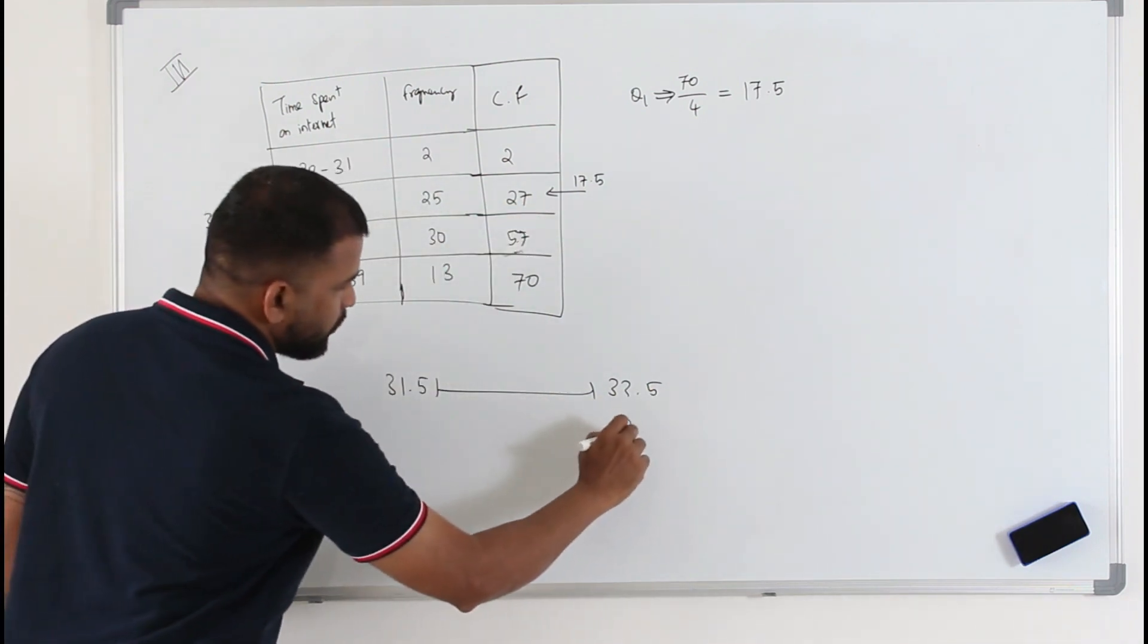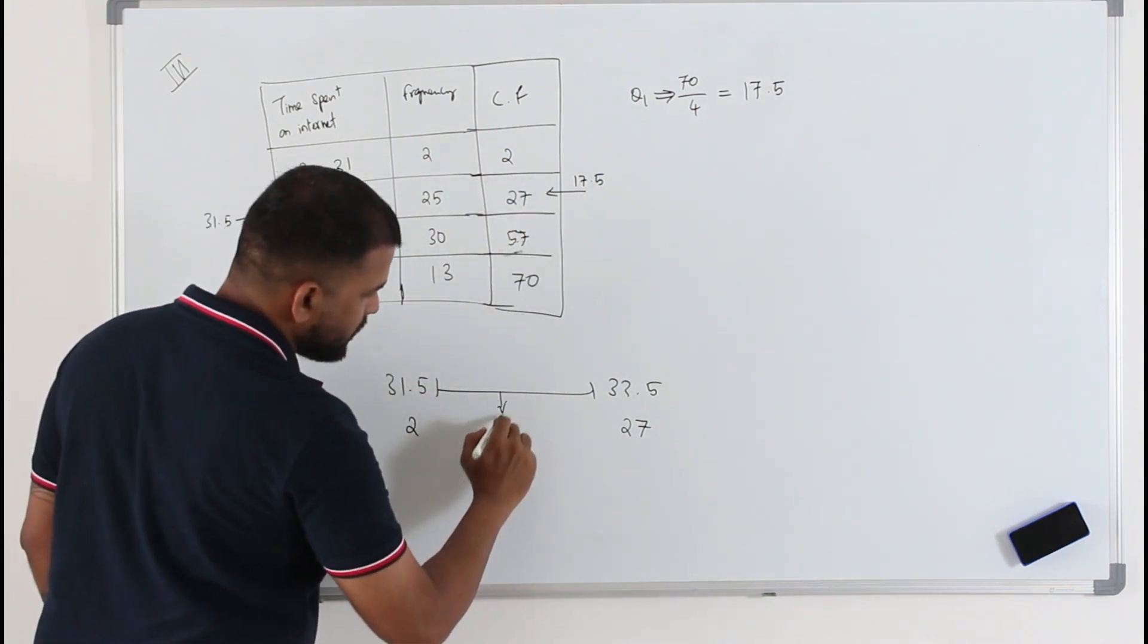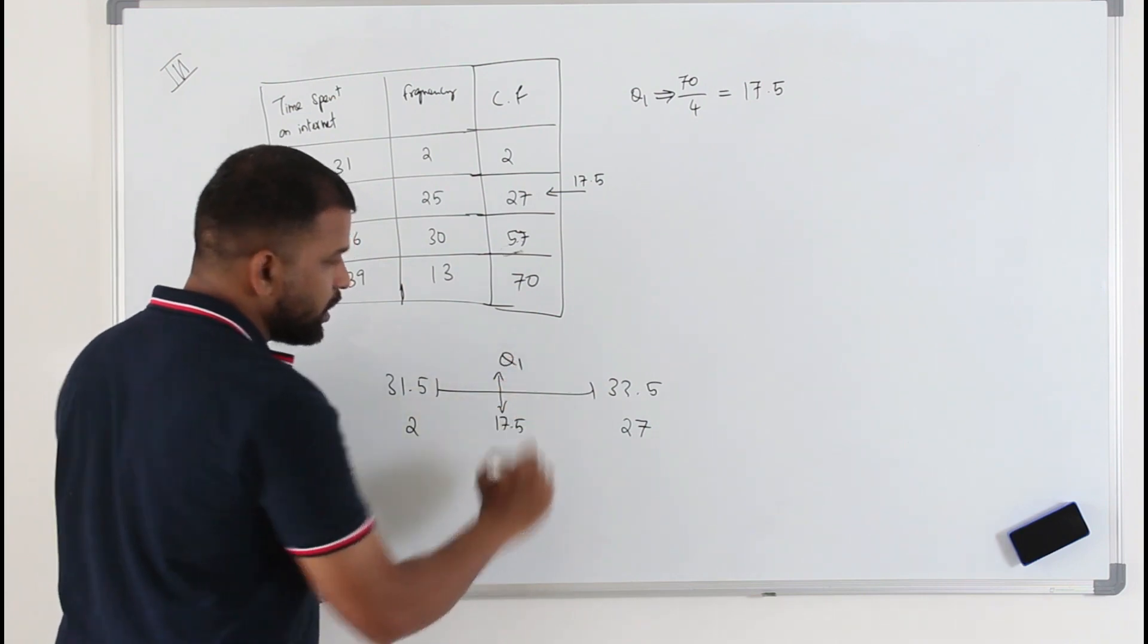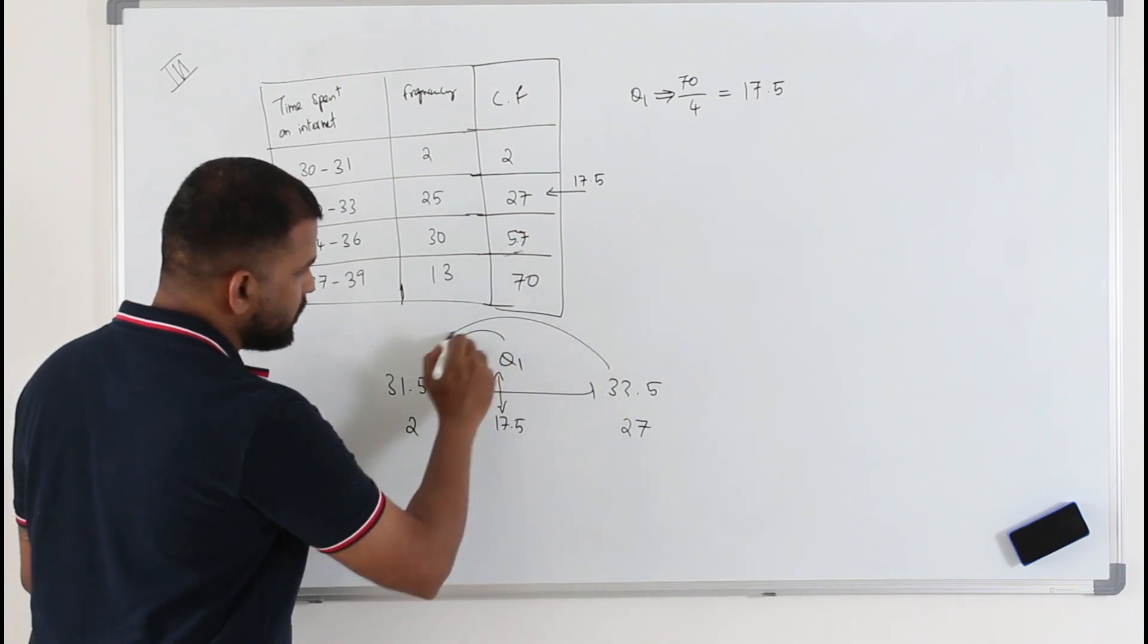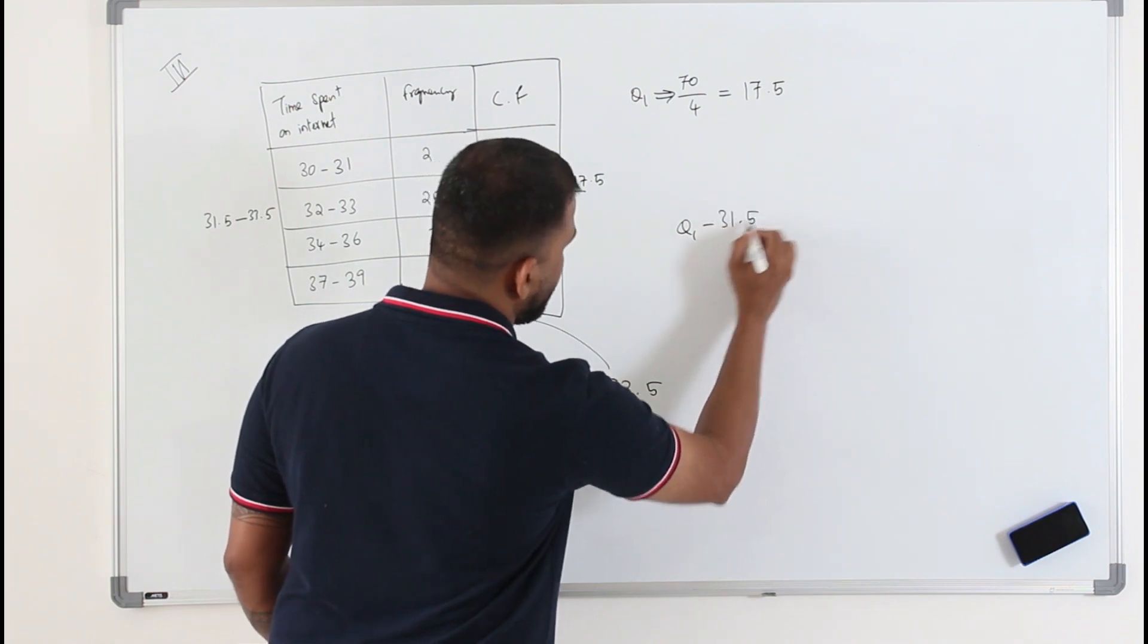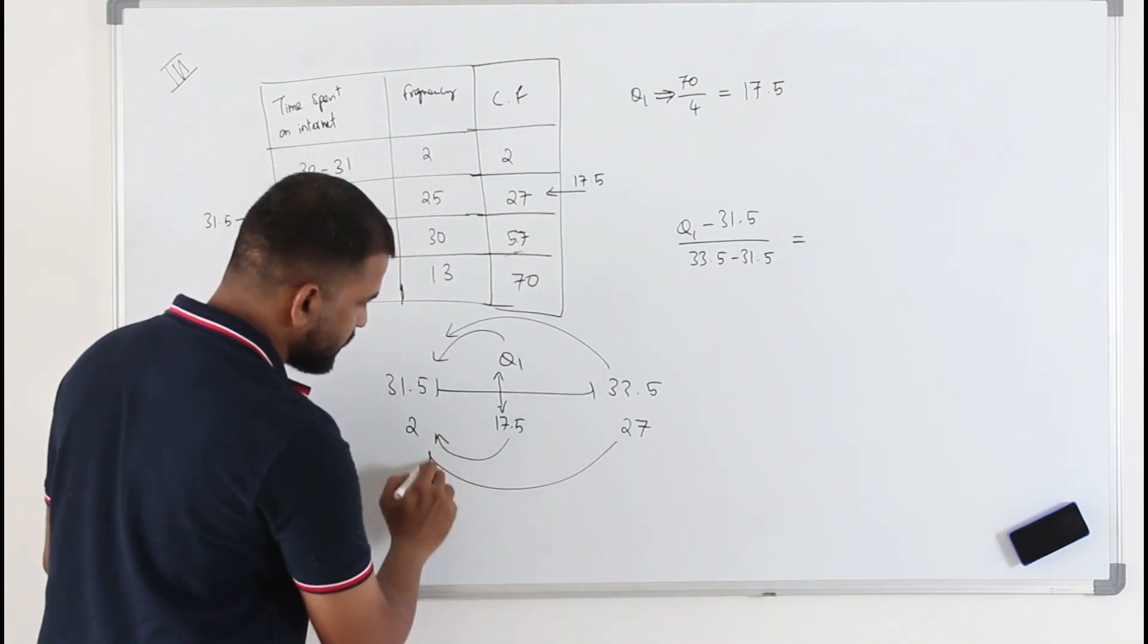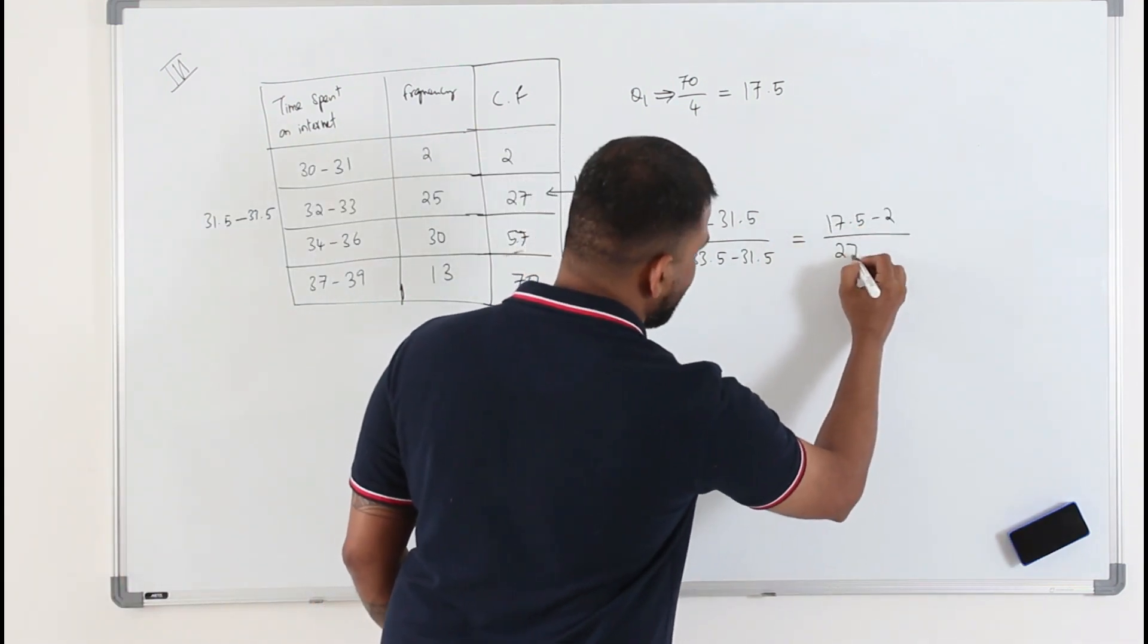The corresponding cumulative frequency and the previous cumulative frequency - your 17.5 is somewhere in between 2 and 27. So the corresponding value here is going to be q1. Apply linear interpolation: q1 minus 31.5 divided by 33.5 minus 31.5 is equal to 17.5 minus 2 divided by 27 minus 2.